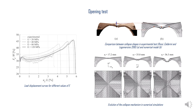The results of the opening tests show that the load-displacement curves have very good agreement between the experimental results and the numerical ones for different values of E. The numerical and experimental collapse shapes show a surprising similarity. The overestimation of the ultimate displacement is probably due to experimental imperfections that were not accounted for in the numerical model.